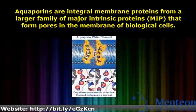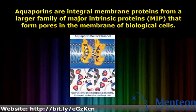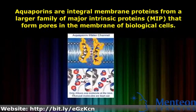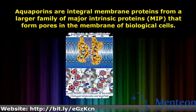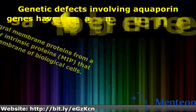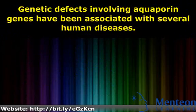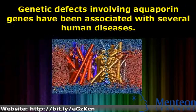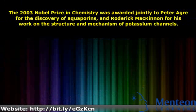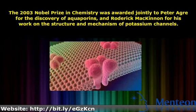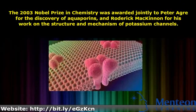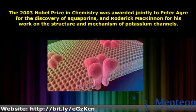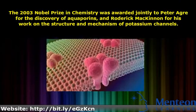MIP proteins form pores in the membrane of biological cells. Genetic defects involving aquaporin genes have been associated with several human diseases. The 2003 Nobel Prize in Chemistry was awarded jointly to Peter Agre for the discovery of aquaporins, and Roderick McKinnon for his work on the structure and mechanism of potassium channels.